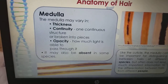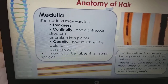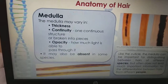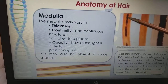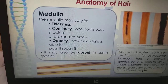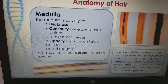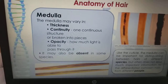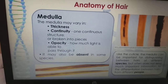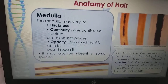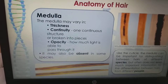The medulla. The anatomy of the hair — the medulla may vary in thickness and continuity: it can be either a continuous structure or broken into pieces. In these pictures we can see the broken pieces and the continuous structure. It also varies in opacity — how much light is able to pass through it — and it may be absent in some species. Like the cuticle, the medulla can be important for distinguishing between the hairs of different species, but often does not tend to provide much useful information for differentiation between the hairs of different people.